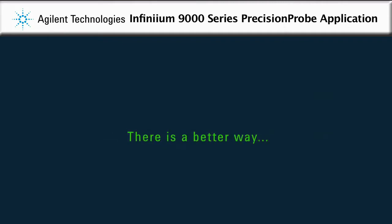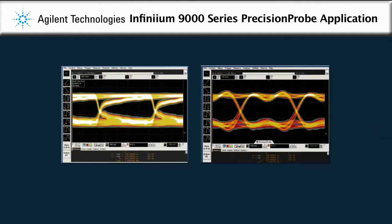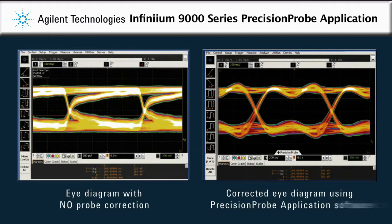There is a better way. Agilent's precision probe application software flattens the frequency response of probes and removes the effects of insertion loss in cables, preserving measurement accuracy right down to the probe tip.